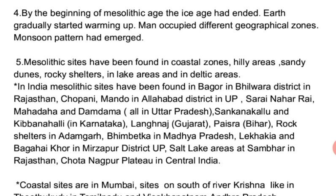Mesolithic sites are found in coastal zones, hilly areas, sandy dunes, rocky shelters, lake areas, and deltaic areas. In India, Mesolithic sites have been found at Bagor in Bhilwara district in Rajasthan, Jaipani Mando in Allahabad district of Uttar Pradesh, and Sarai Nahar Rai, Mahadaha, and Damdama — all in Uttar Pradesh.